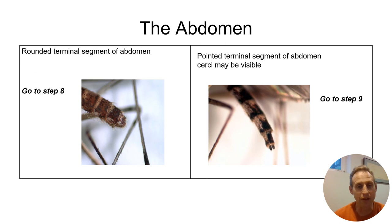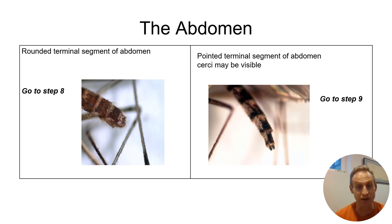The abdomen is another great character that we'll use in several steps along the key. One of the early steps is you're going to look to see if the bottom of the abdomen is rounded — you can see the rounded abdomen on the left — and sometimes the last segment of the abdomen is pointed, with little cerci at the bottom. That will be one of the characters you look at; I find it a pretty easy character to see.